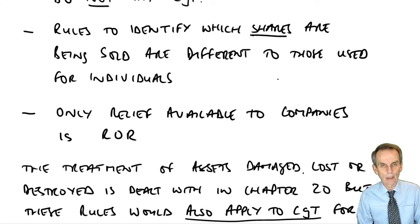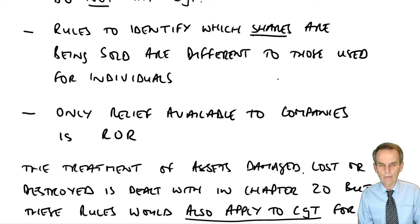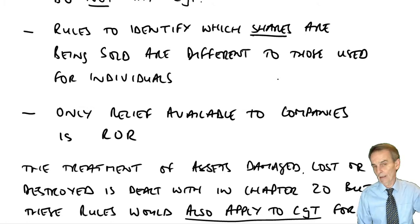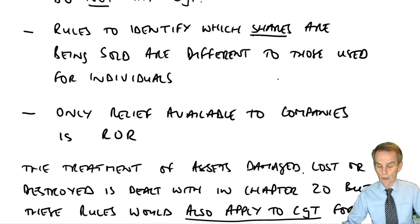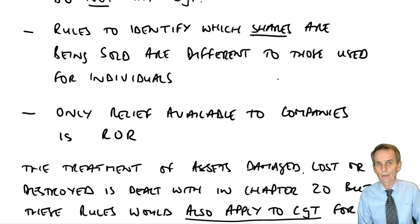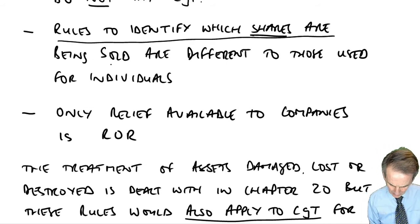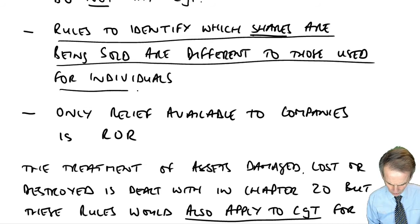Because of certain issues — like individuals get AEA and companies don't — we've got different identification rules. You're going to have to learn those rules, but they're not too complicated. With a bit of question practice they are very straightforward. It's an incredibly mechanical process — you are deemed to firstly sell these shares, followed by those shares, followed thirdly by these shares. You either know the rules and you apply them, or you don't know the rules and you can't apply them. Learn the rules, practice the rules, get it right.